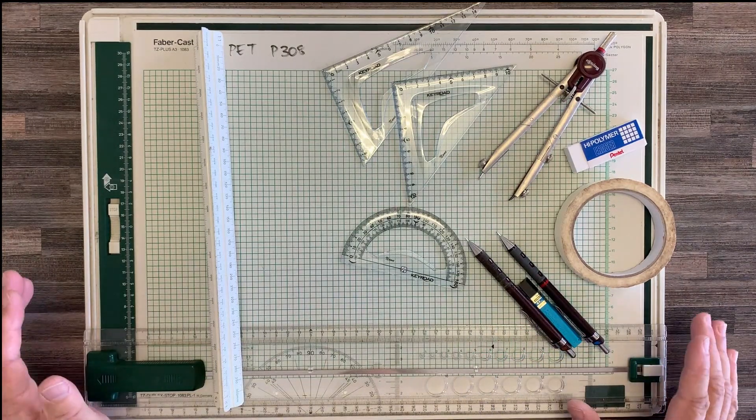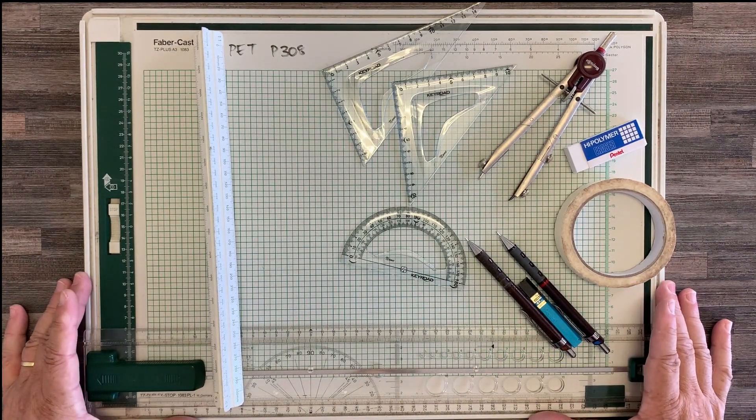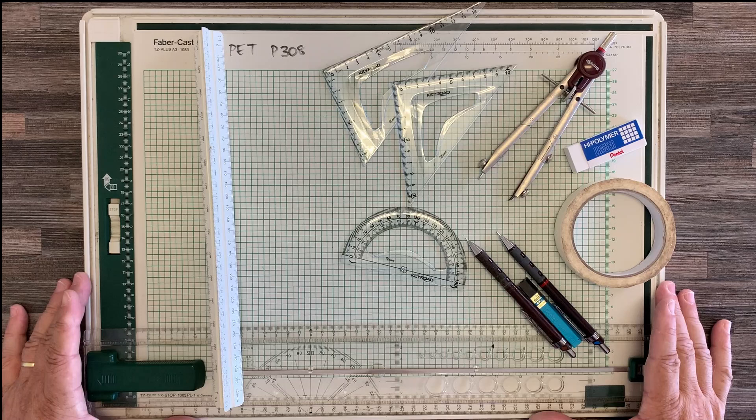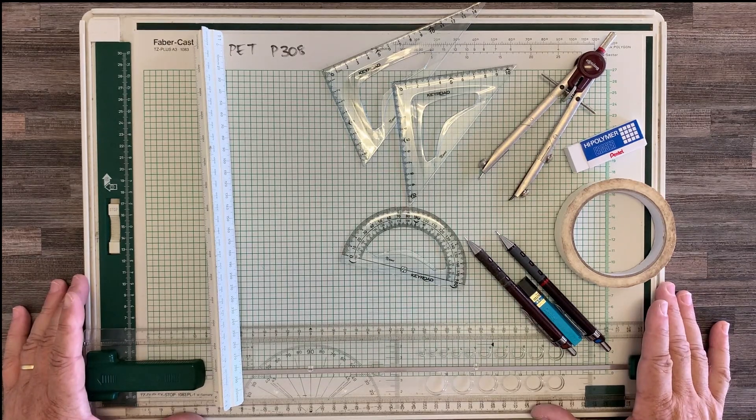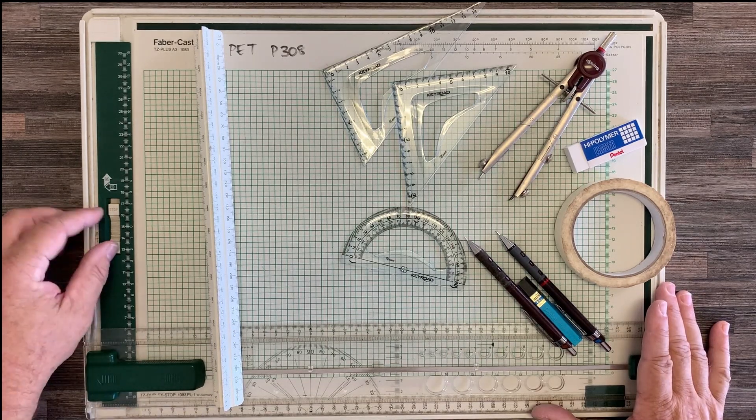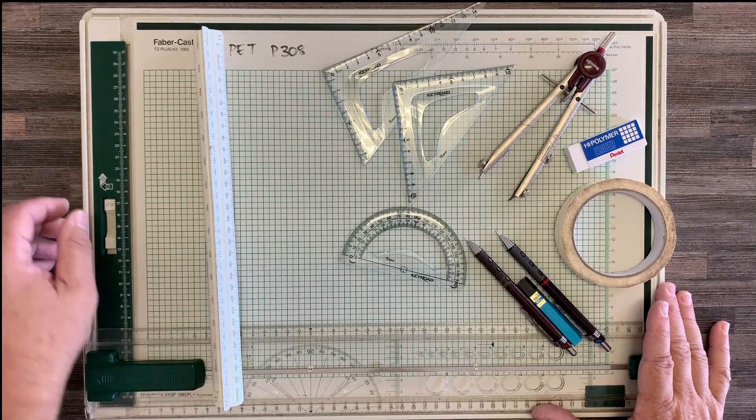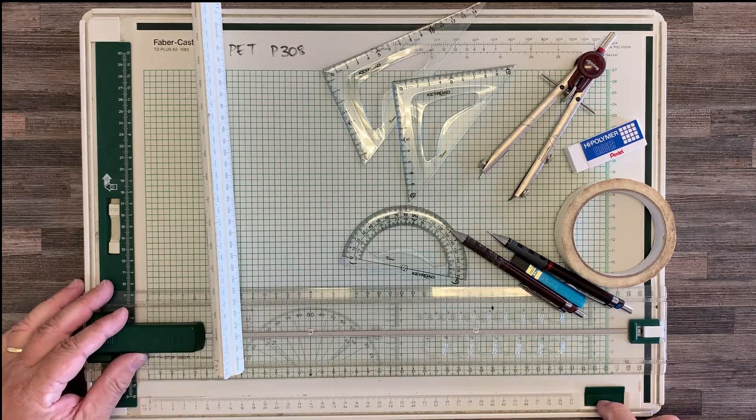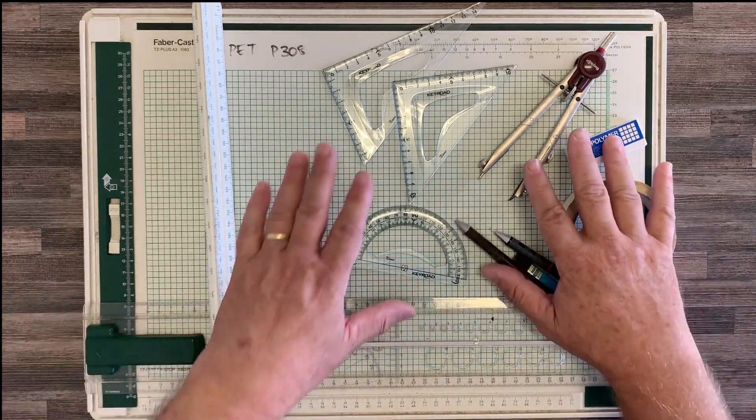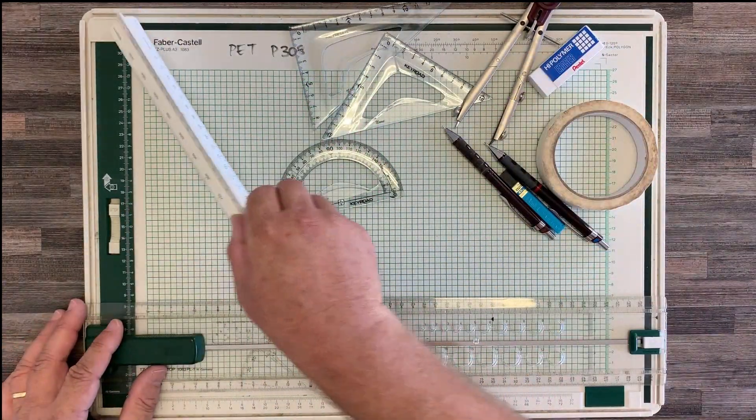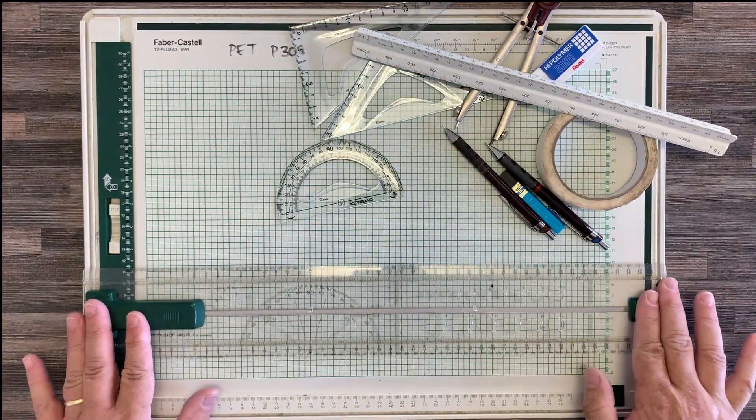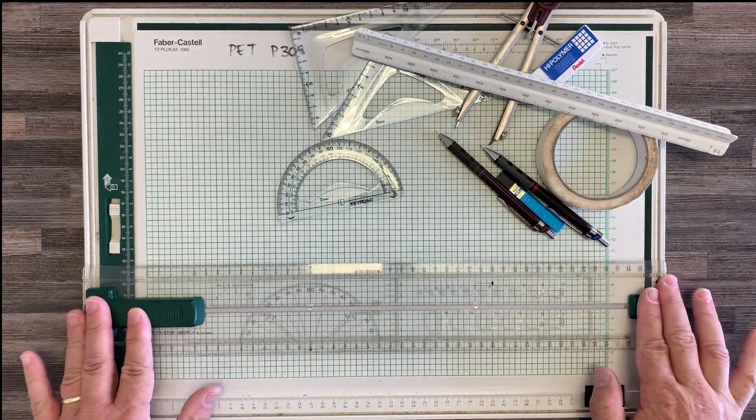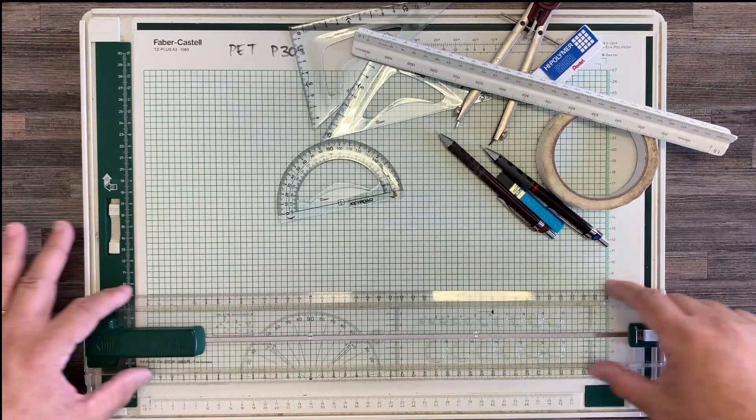So what we have at the bottom here is the drawing board, and this is designed to take an A3 paper that clips in underneath over here and on this corner over there. What it has is a ruler that slides into grooves and allows you, which keeps it horizontal.